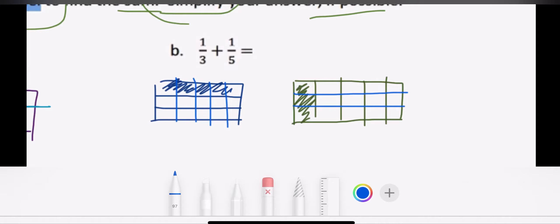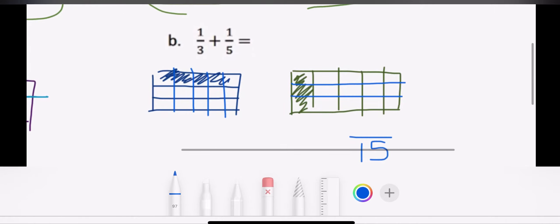So now I see that I have a total of one, two, three going vertically and one, two, three, four, five going horizontally. So I now know that my denominator or my bottom number is 15. And I know that because five times three is 15. So that's my common denominator now.